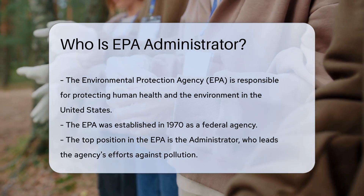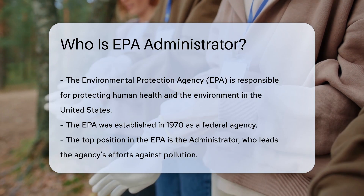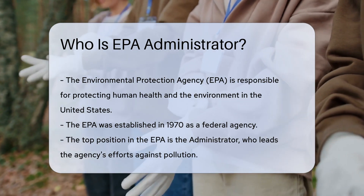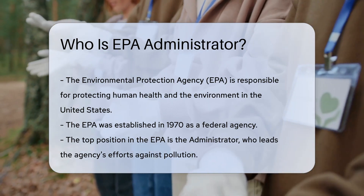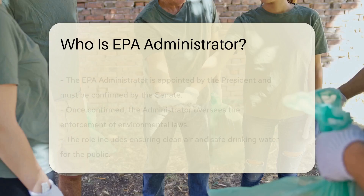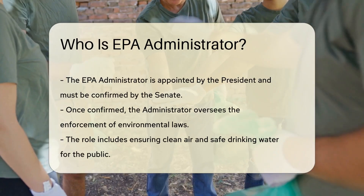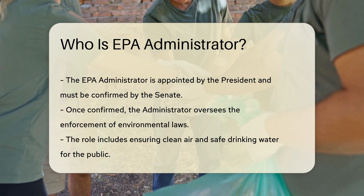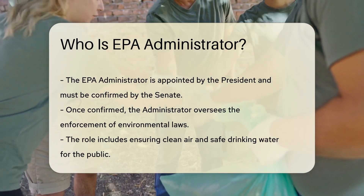The EPA is like the guardian of America's environmental health. It's a federal agency, created in 1970, tasked with protecting human health and the environment. The Administrator of the EPA is the top dog, leading the charge against pollution. This person is appointed by the President of the United States, but they must also be confirmed by the Senate.